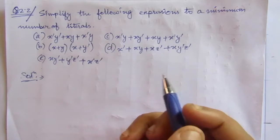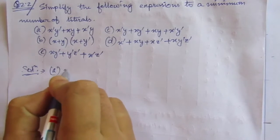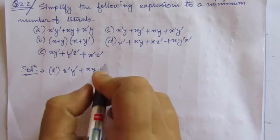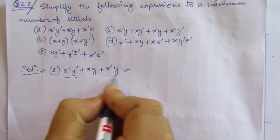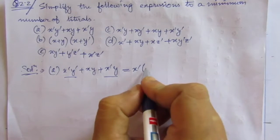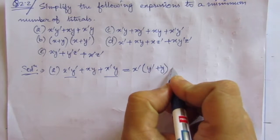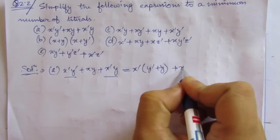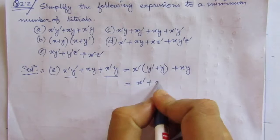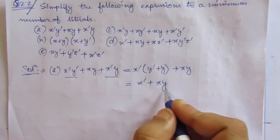We have to minimize these terms. The first problem is x̄ȳ + xy + x̄y. From the first and third terms, if we take x̄ common, we get y̅ + y, which is nothing but 1. So x̄ plus xy. So the minimum number of literals is x̄ + xy.